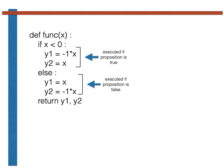Instead of stating that this code is executed if the proposition x is less than 0 is false, we can state that this code is executed when the negation of this proposition, in this case x is greater than or equal to 0, is true.